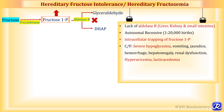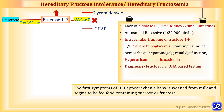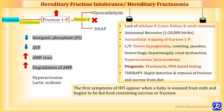Clinical features include severe hypoglycemia, vomiting, jaundice, hemorrhage, hepatomegaly, renal dysfunction, hyperuricemia and lactic acidemia. The first symptoms appear when a baby is weaned from milk and begins to be fed foods containing sucrose or fructose. Diagnosis is by detection of fructose in urine by Benedict's test and Seliwanoff's test, and also by DNA-based testing. Treatment is by rapid detection and removal of fructose and sucrose from the diet.